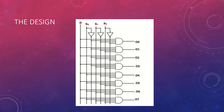When all three select lines are zero, O0 is enabled. You can take zero for S0, zero for S1, and zero for S2. Similarly, when all three are 1, it is O7 that is selected. We keep incrementing the select line values to get the corresponding output line — that's how the 1-to-8 DMUX works.